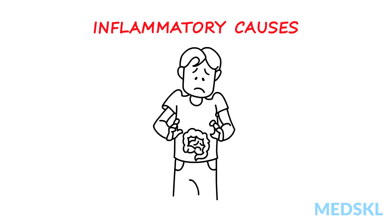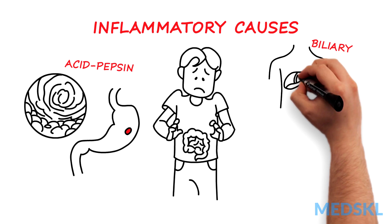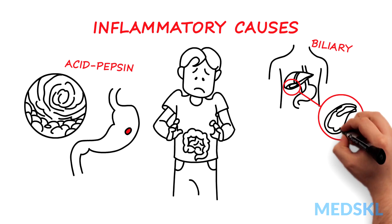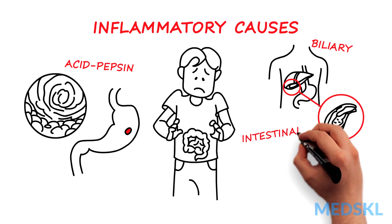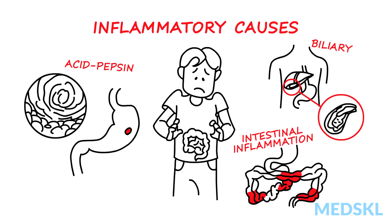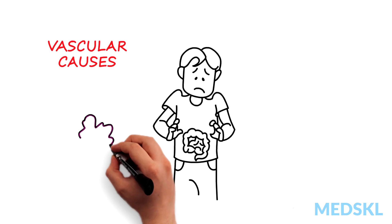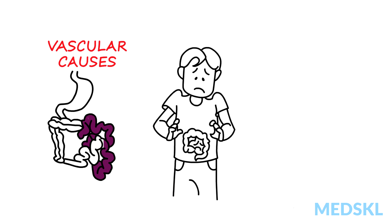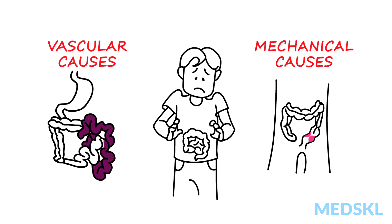Inflammatory causes include those related to acid pepsin disease such as gastritis, ulcers or reflux, biliary causes such as chronic cholecystitis, sphincter of Oddi dysfunction, pancreatitis, or intestinal inflammatory causes such as Crohn's or diverticular disease. Vascular causes include mesenteric ischemia. Mechanical causes can be due to a partial bowel obstruction or celiac disease.